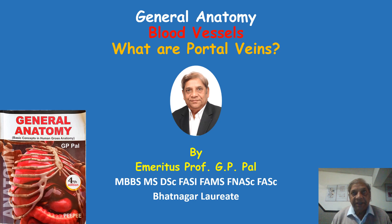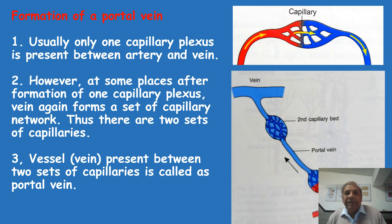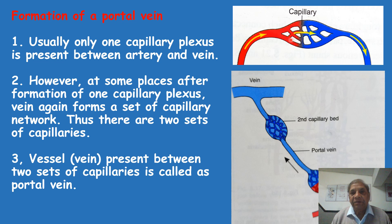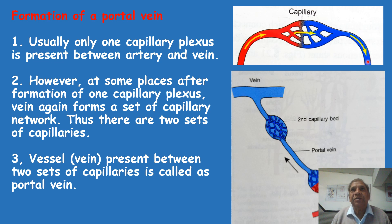Normally, a vein is formed only after the capillaries — after the arterial end of the capillaries it becomes the venule and the vein is formed. Usually only one capillary plexus is present between an artery and vein. The terminal arteriole carries oxygenated blood into body tissue and forms a capillary network. The other end of this network forms a venule, which forms a vein that drains into a larger vein and ultimately into the heart. This is the usual pattern in most tissues of the body.